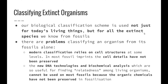How can we identify and discuss the difficulties experienced in classifying extinct organisms? Our biological classification scheme is used not just for today's living things, but for all extinct species we know from fossils. There are obviously some problems classifying an organism from its fossils alone. Modern classification relies on cell structure at some levels, but in most fossil imprints the cell details have not been preserved — usually we only have an imprint or a hard shell. The use of DNA technologies and biochemical analysis, which is so useful for finding relatedness among living organisms, cannot be used on most fossils because the organic chemicals have not been preserved in fossilization. We're unable to extract DNA from most fossils, so we're unable to compare DNA similarities or other biochemicals such as amino acids.